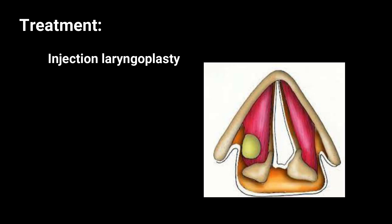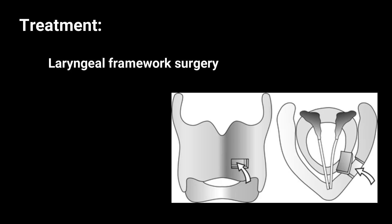Autologous fat has viscoelastic properties close to the lamina propria and provides good medialization and bulk to the vocal cord. Fat is now accepted to be one of the safest physiological substances for augmentation. Open neck medialization or laryngeal framework surgeries are invasive procedures with their own definitive risks of implant dislodgement and laryngocutaneous fistula.